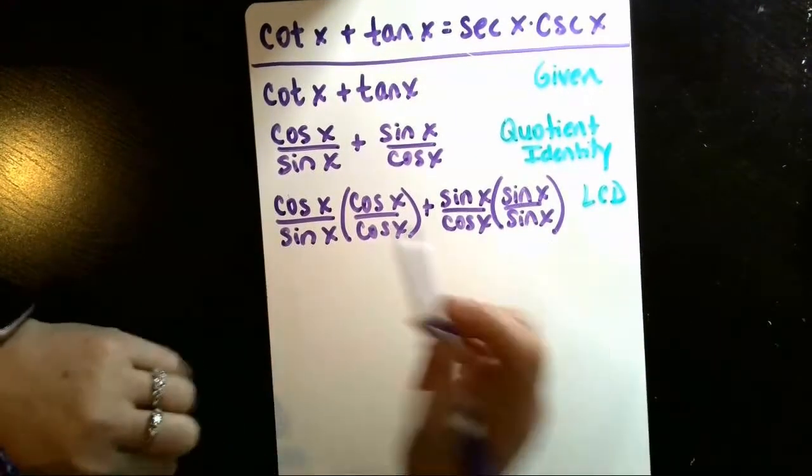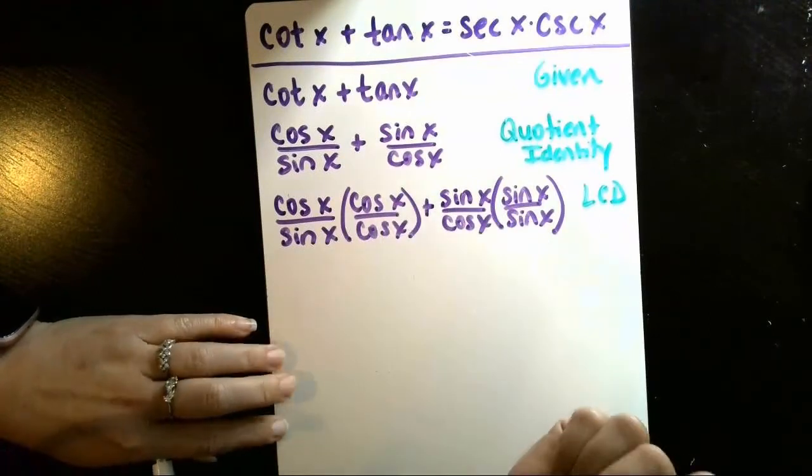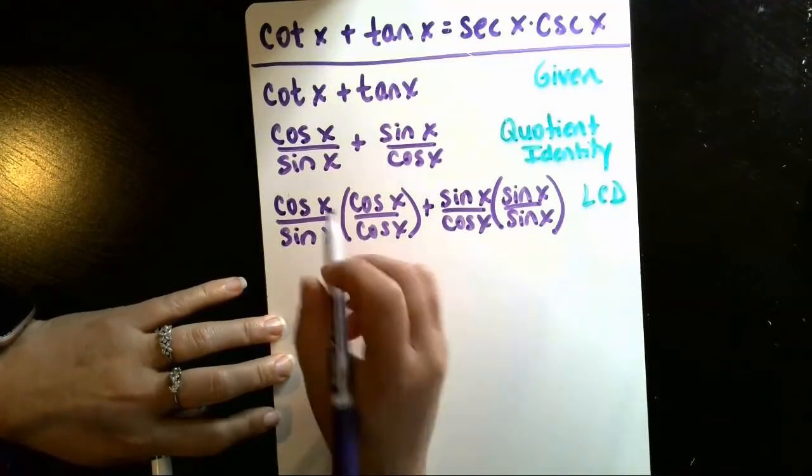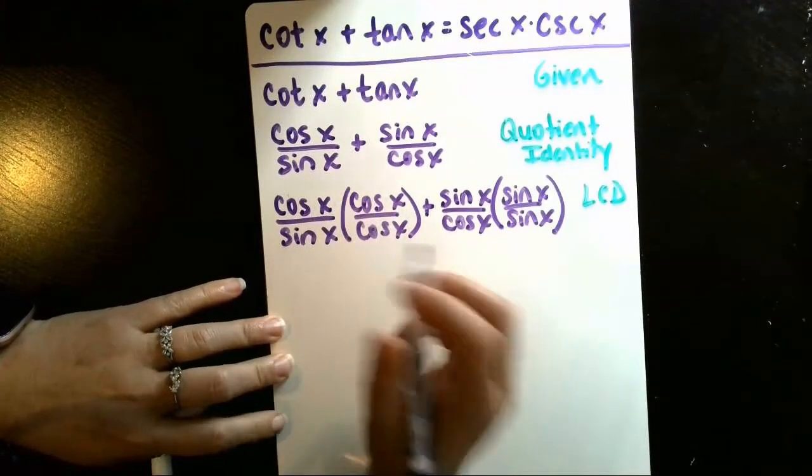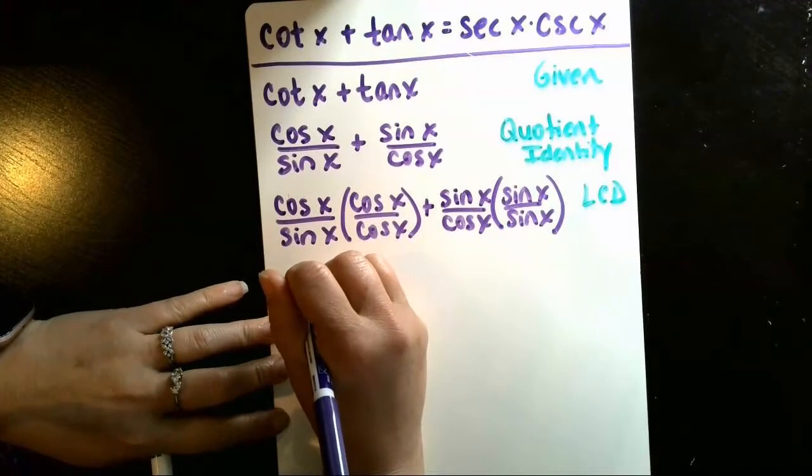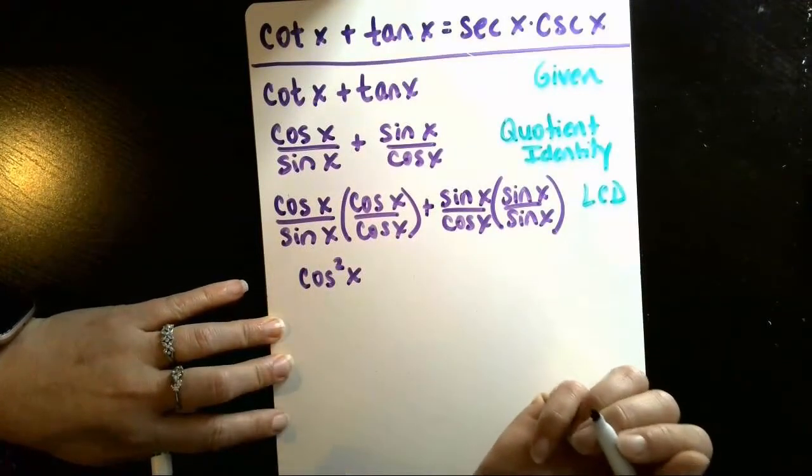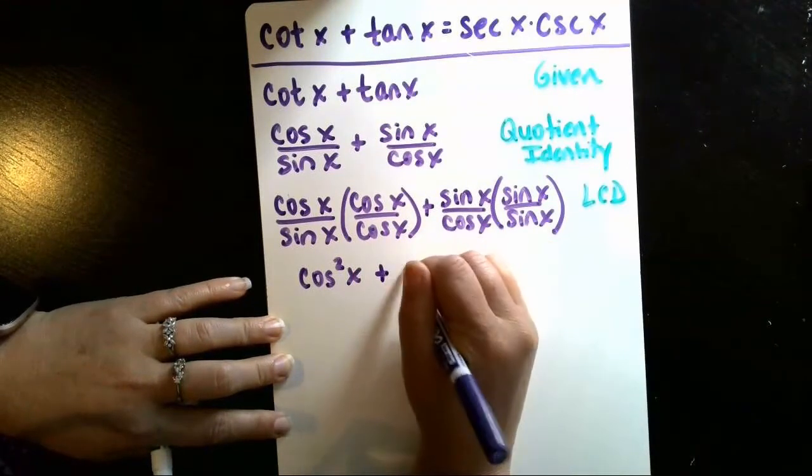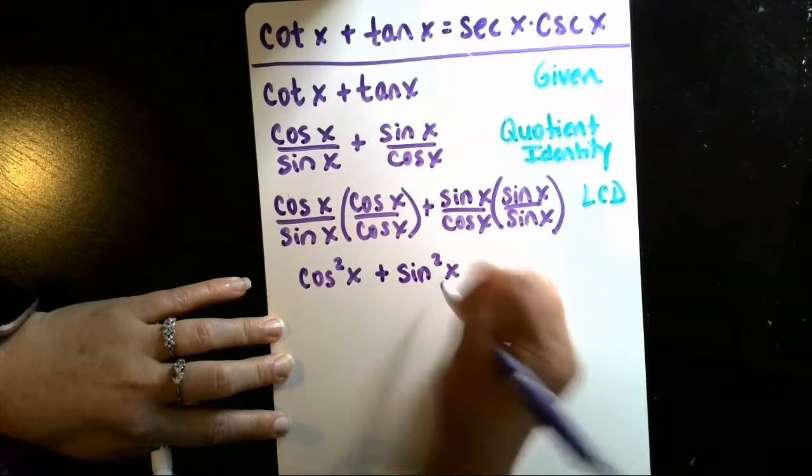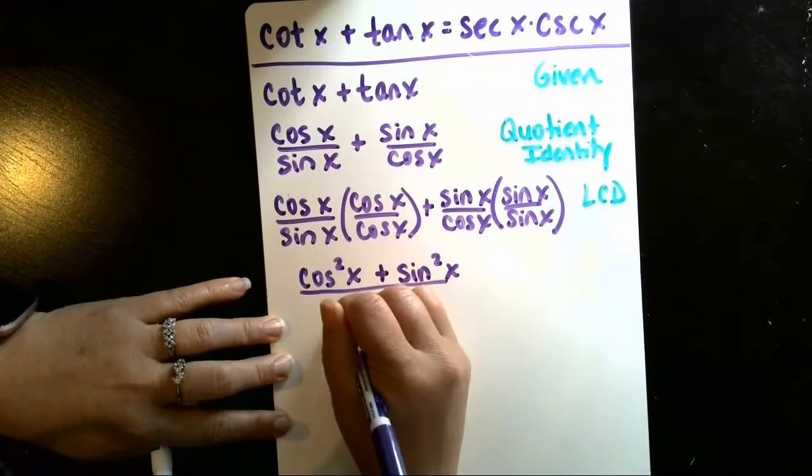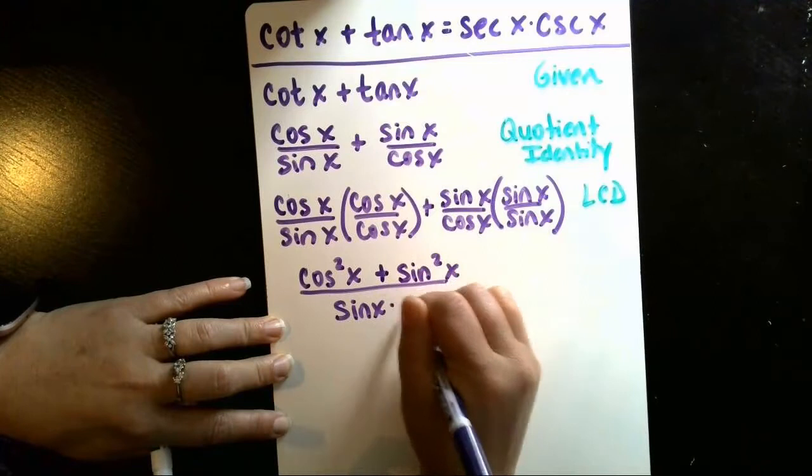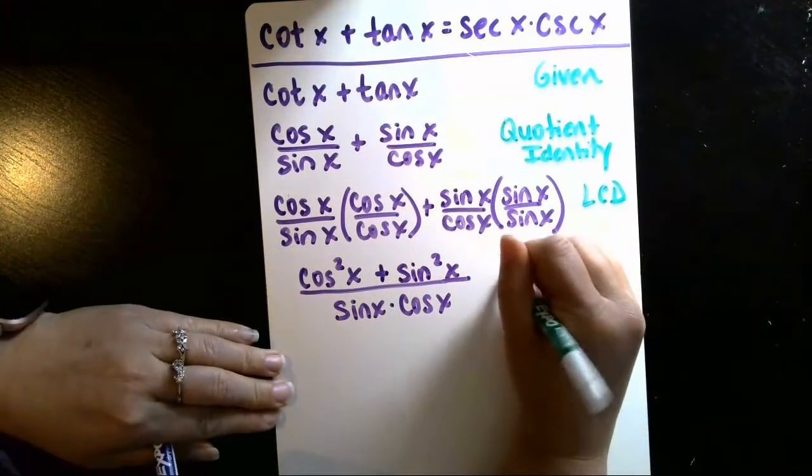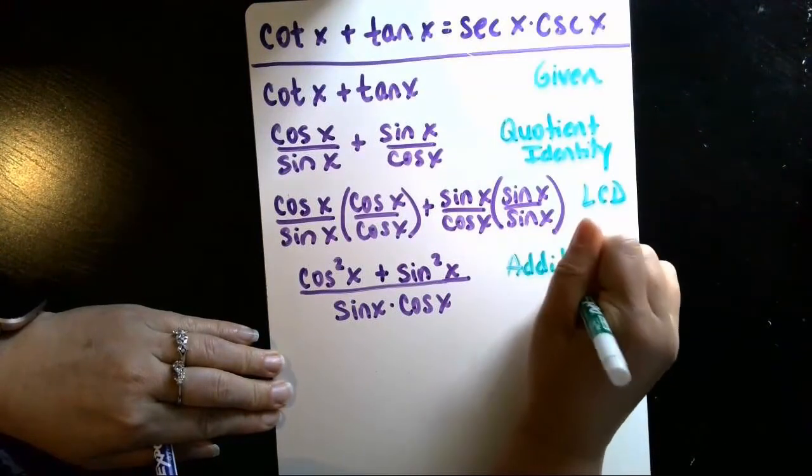Now we can go ahead and combine these to condense that addition into one fraction. Now they have a common denominator, so in my numerator of the first fraction, I'll have cosine squared x, and in the numerator of my second fraction, I'll have sine squared x, and then that'll all be over my common denominator of sine x, cosine x. That was addition.